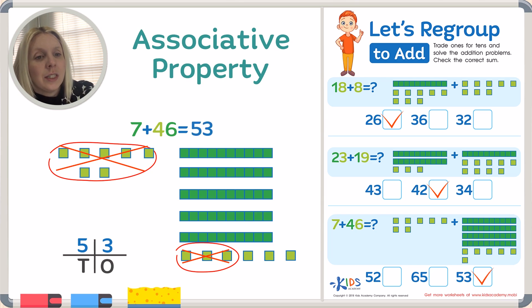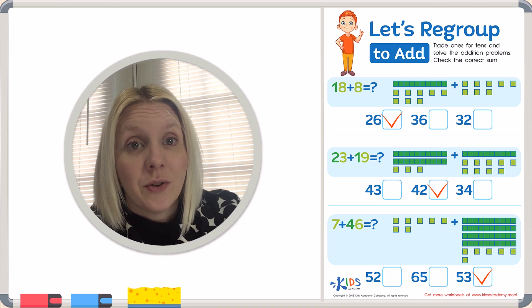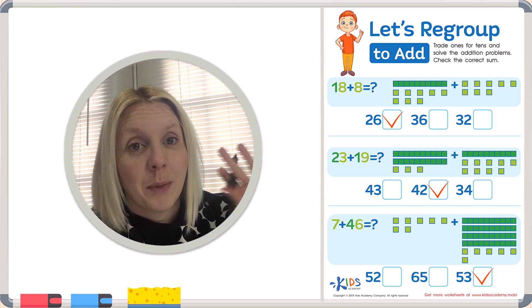See how easy that was when we regroup? We know that three numbers go together in an associative property, but it's hard to see that sometimes when we have to count all the individual units. So we regroup to make it easier so we can just quickly see all those tens in columns. That's much easier and a lot of fun. I'll see you guys again next time. Bye-bye.